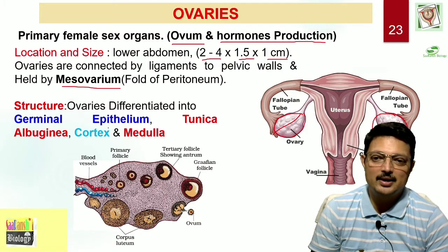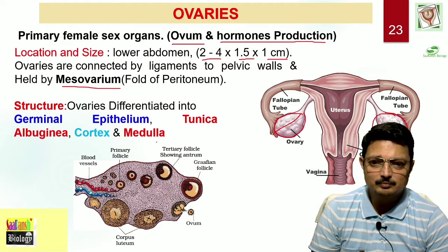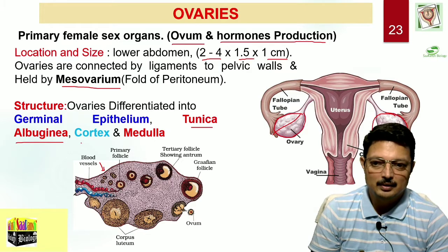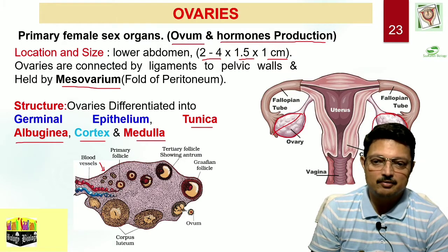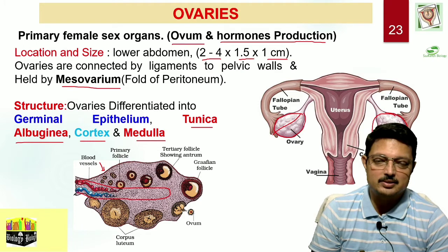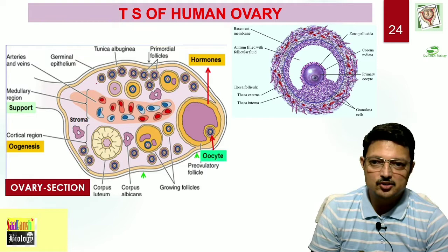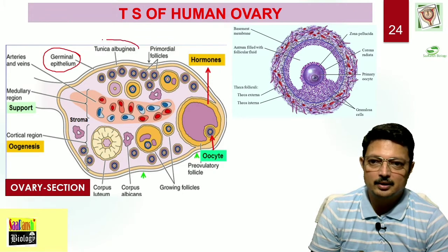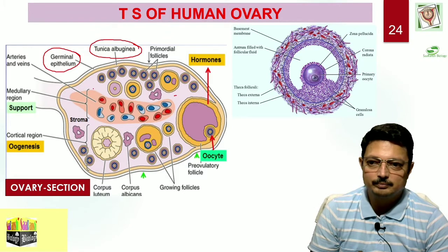When we take a section of the ovary, it is differentiated into four general layers. The outermost is the germinal epithelium, as seen in the NCERT diagram. Then comes a protective layer called tunica albuginea. Then comes the cortex and the medulla. The cortical region can be easily differentiated as it contains follicles at different developmental stages. The medulla is the innermost part, which contains blood vessels.